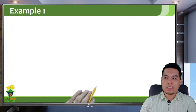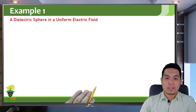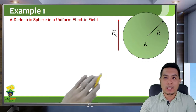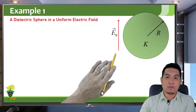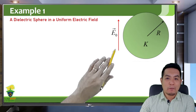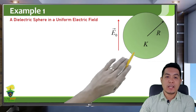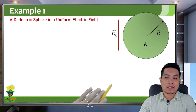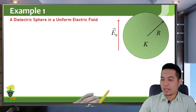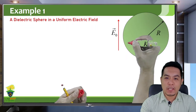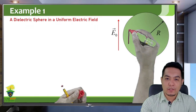Let's go directly to an example. This is a dielectric sphere in a uniform electric field — you have a sphere with dielectric constant K immersed in a uniform electric field. Because of the external electric field, this dielectric sphere will become polarized, so it will have a polarization in the direction of the field.